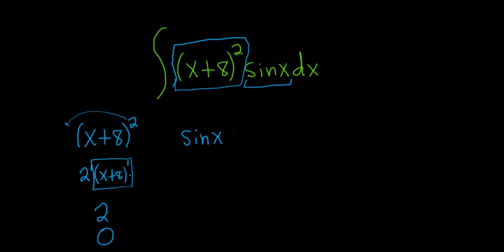Now we have to integrate sine x. When you integrate sine x, you have to think backwards. What's a function whose derivative is sine? Well, the derivative of cosine is negative sine, so this has to be negative cosine x.